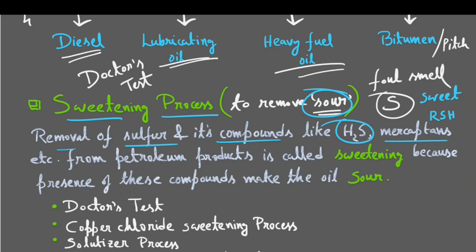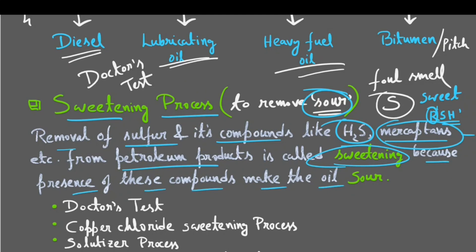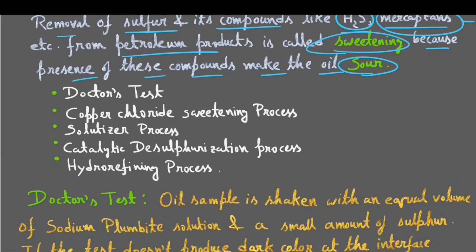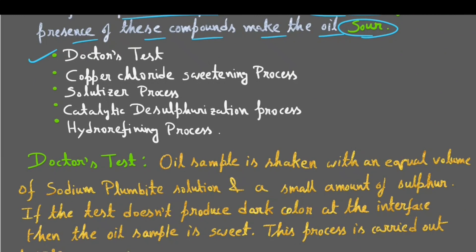Mercaptans are like RSH, where R can be any alkyl group. If it's ethyl, we call it ethyl mercaptan; if it's methyl, we call it methyl mercaptan. The SH group is responsible for the name mercaptan. So, removal of sulphur and its compounds like H2S and mercaptans from petroleum products is called sweetening. There are five known ways: doctor's test, copper chloride sweetening (using cupric chloride CuCl2, not cuprous), solutiser process, catalytic desulphurization process, and hydro refining process.